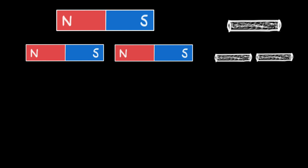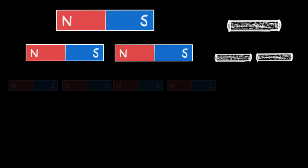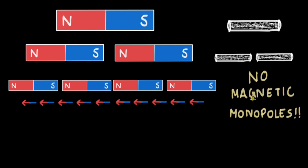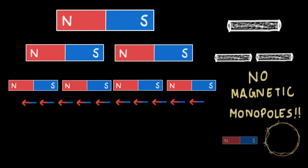It turns out that if you keep on breaking these bar magnets into smaller and smaller pieces, you keep on getting newer magnets. And this is true right to the level of an atom — even an atom has a north pole and a south pole. There are no magnetic monopoles known to exist. You never get a separate north pole or just a south pole. The simplest magnetic structure known to exist is a magnetic dipole. A bar magnet can be a magnetic dipole, and also a current-carrying loop can be a magnetic dipole.